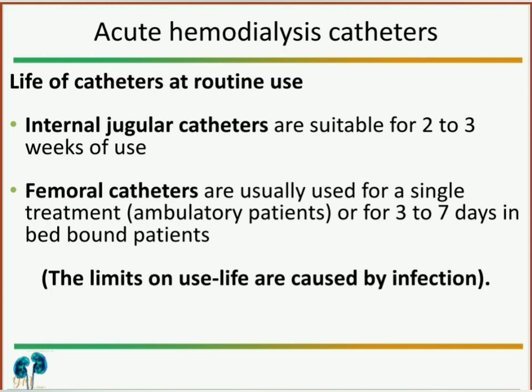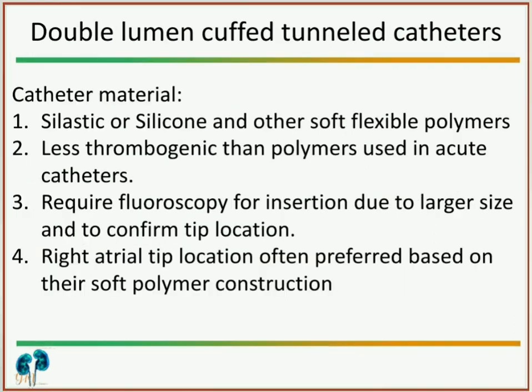Internal jugular catheters are suitable for two to three weeks of use. Femoral catheters are usually used for a single treatment if the patient is ambulatory. They can be used for three to seven days if the patient is bed-bound, such as in the ICU. The femoral catheter is recommended for single treatment because it has a greater chance of infection due to its proximity to the genital area.